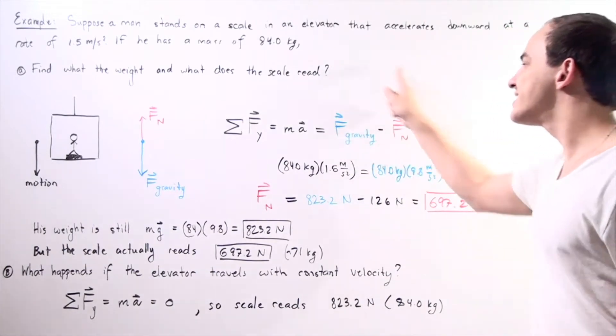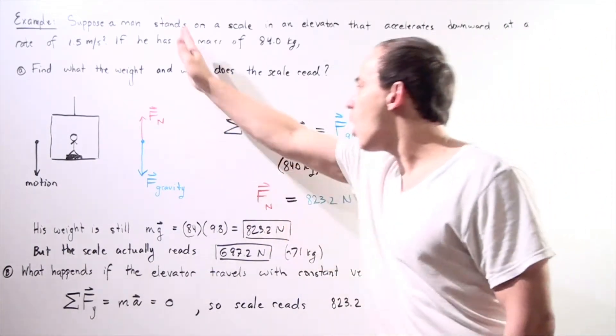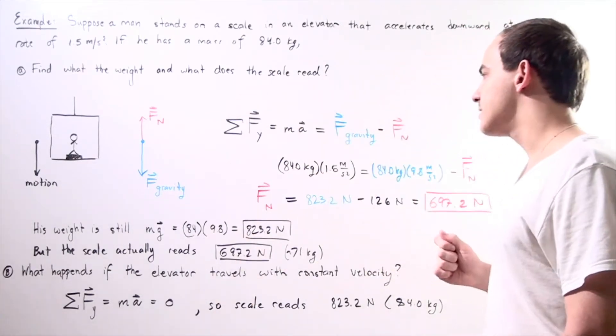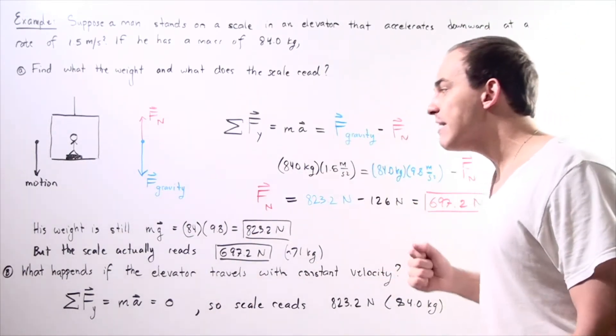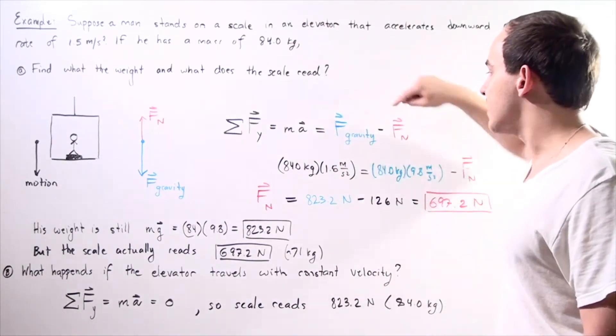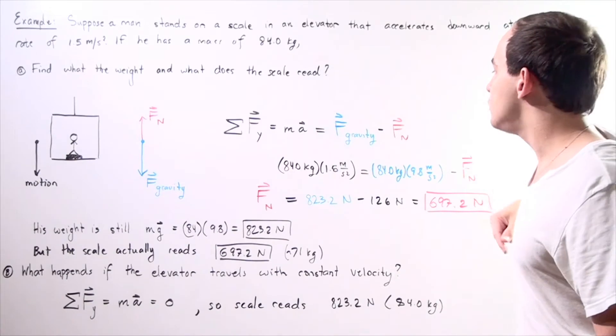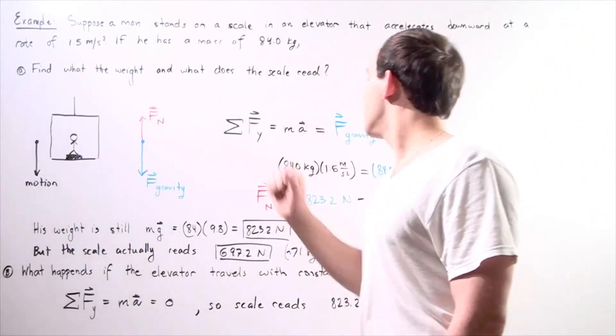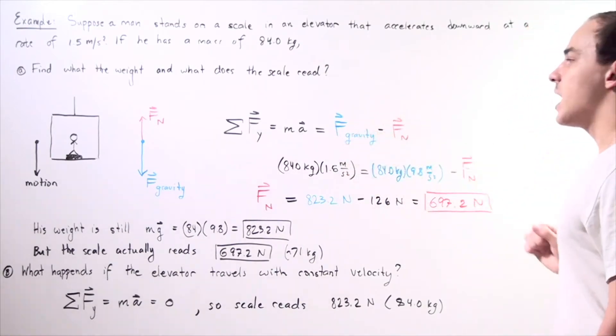This is equal to the sum of all the forces along our y-axis. We choose downward to be positive, so our force of gravity, our weight, is going downward and it's positive. We subtract the normal force which points upward from our weight of the object.